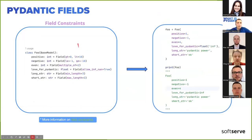We also have field constraints, as seen previously: greater than or equal, less than, less than or equal, multiple of, string patterns, string lengths, and so on. Pydantic provides special constraints on fields that will raise a validation error if incoming data doesn't satisfy the constraint.